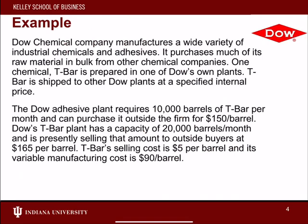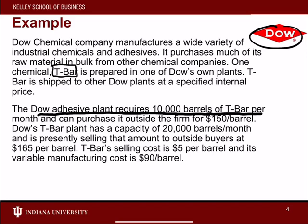Let's do a quick example. Here is Dow Chemical Company. They purchase much of the raw materials in bulk from other chemical companies. One chemical, T-bar, is prepared in one of its own plants and shipped to other Dow plants at a specific internal price. The adhesive plant requires 10,000 barrels of T-bar per month, and can purchase it outside the firm for $150 per barrel. The T-bar plant can make 20,000 barrels per month and is presently selling all 20,000 barrels outside to buyers at $165 per barrel.